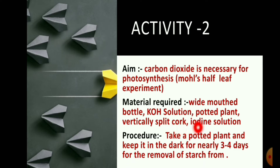First, take a potted plant and keep it in the dark for nearly three to four days for the removal of starch. Keeping the plant in a dark place slows down photosynthesis, which removes previously stored starch from the leaves, roots, and stems.